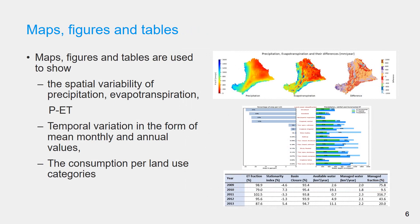Sheet 1 provides an overview of water resources and their current utilization per different land use categories; however, all values expressed are averaged over the basin. We also need to show the spatial variability of precipitation, evapotranspiration, and their differences, temporal variation in the form of mean monthly and annual values, and the consumption per water accounting plus land use categories and per land cover categories. To show spatial and temporal variabilities, we use different maps, figures, and tables.